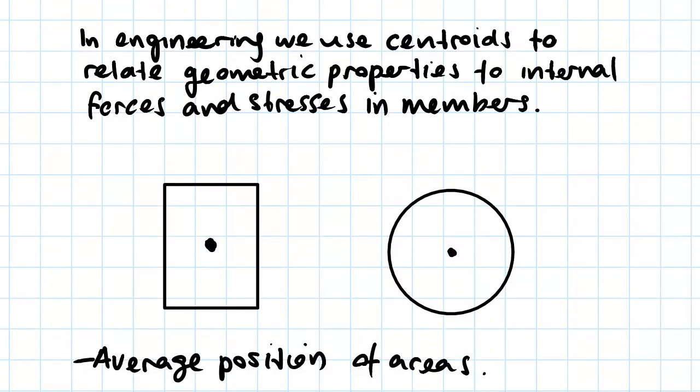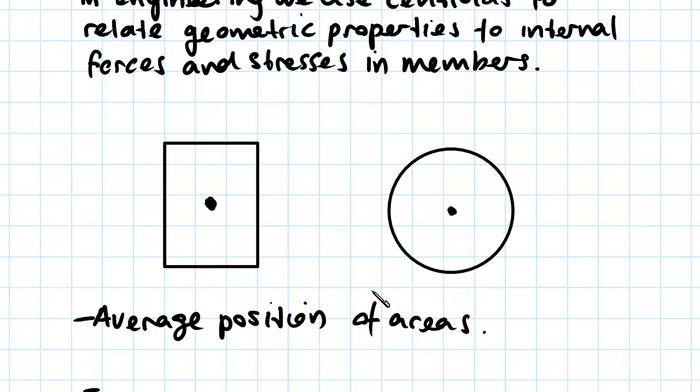So if we look at what a centroid is, it's basically just the center of mass of an object. For simple objects like this rectangle here, you can see that the centroid is right in the middle. And for a circle, it's going to be right at the center. So it's basically just an average position of areas. For these, we've assumed the density is uniform across the whole thing.